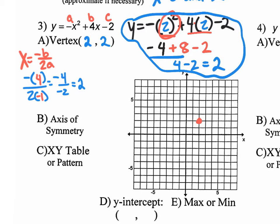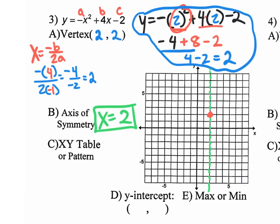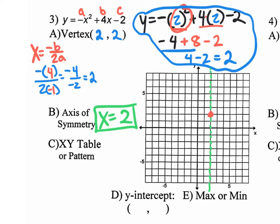Let's graph the vertex at 2, 2: go 2 on the x and 2 on the y. The very next thing is to draw your axis of symmetry. The equation of the axis of symmetry is x equals 2, simply the x value of the vertex. Then we can use the pattern 1-1, 2-4, 3-9 — or a table, but the pattern is faster.